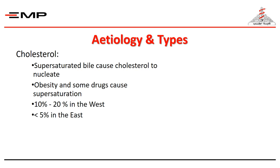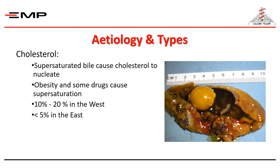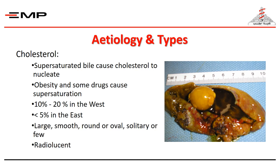Gallstones can be divided into three main types: cholesterol, pigment, and mixed stones. Cholesterol stones are relatively more common in western countries, but are very rare in Egypt and other eastern countries. Cholesterol nucleates to form a stone when its concentration relative to phospholipids and bile acids increases. Once a cholesterol nucleus forms, more and more cholesterol deposits on the surface and the stone grows. Therefore, cholesterol stones are large and few in number, usually one or two stones.